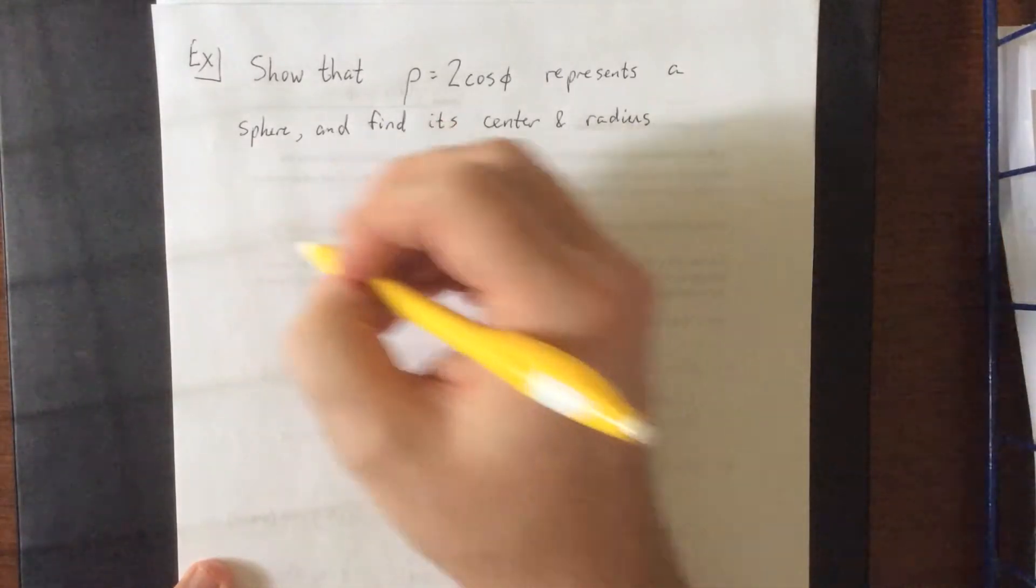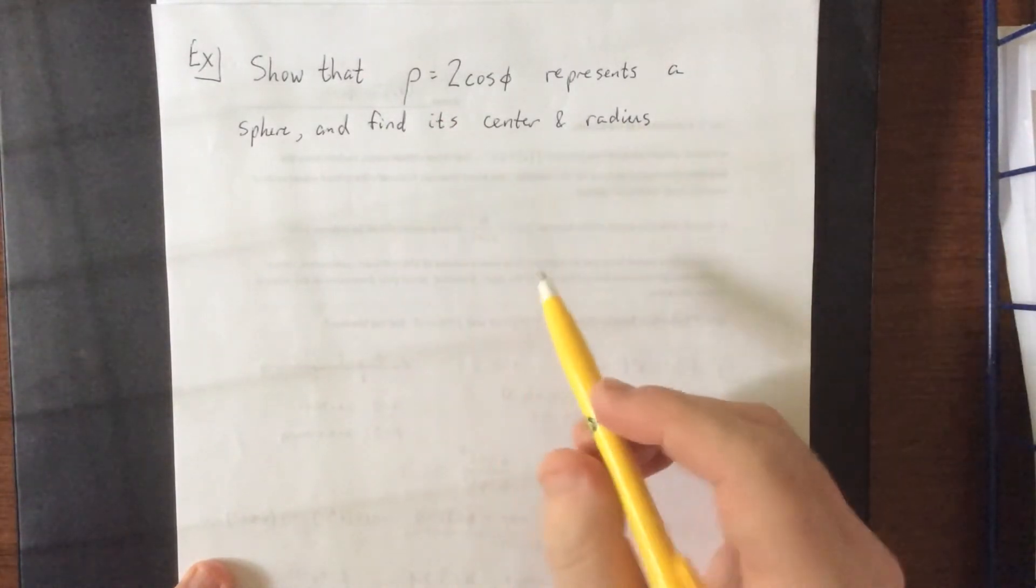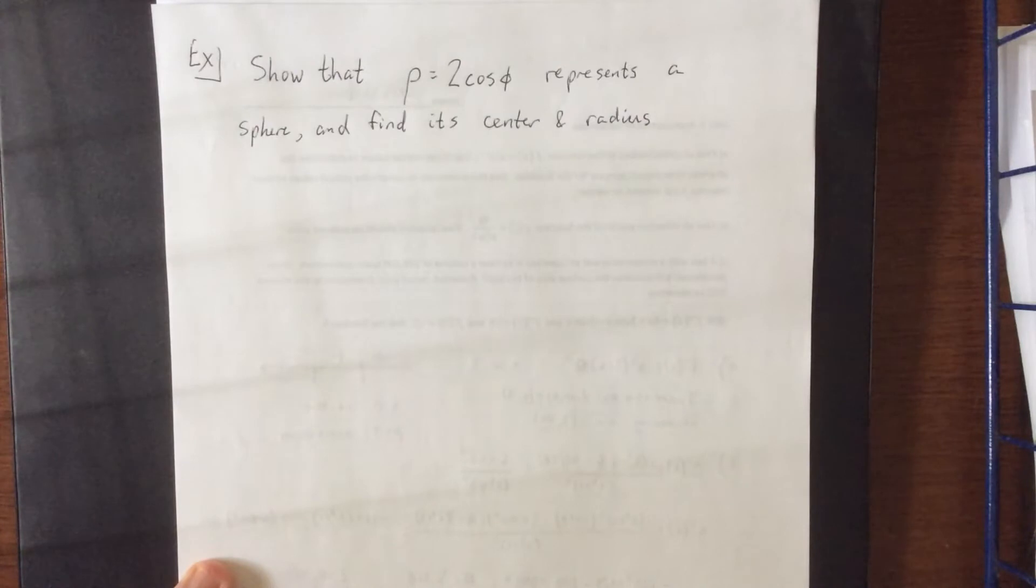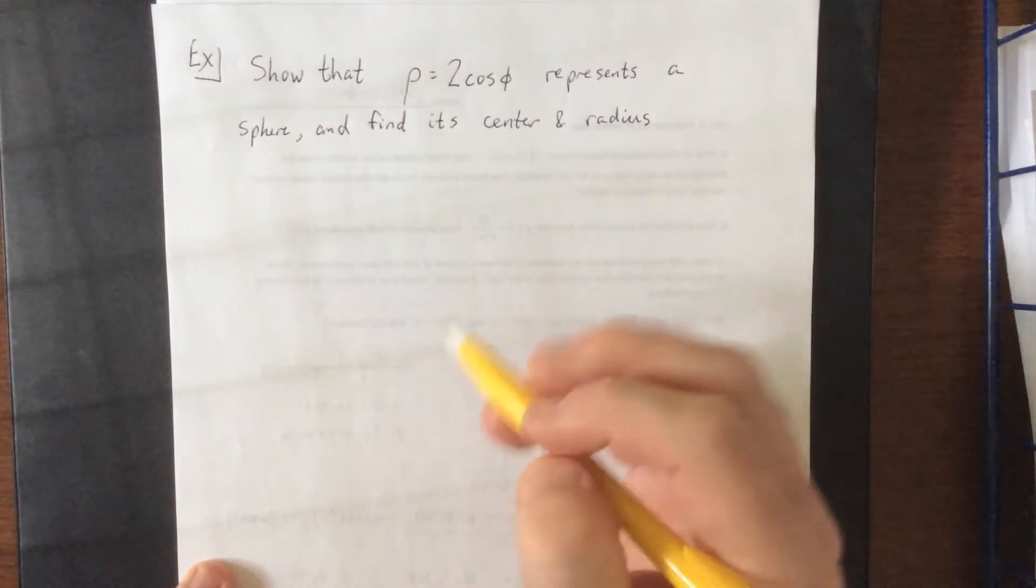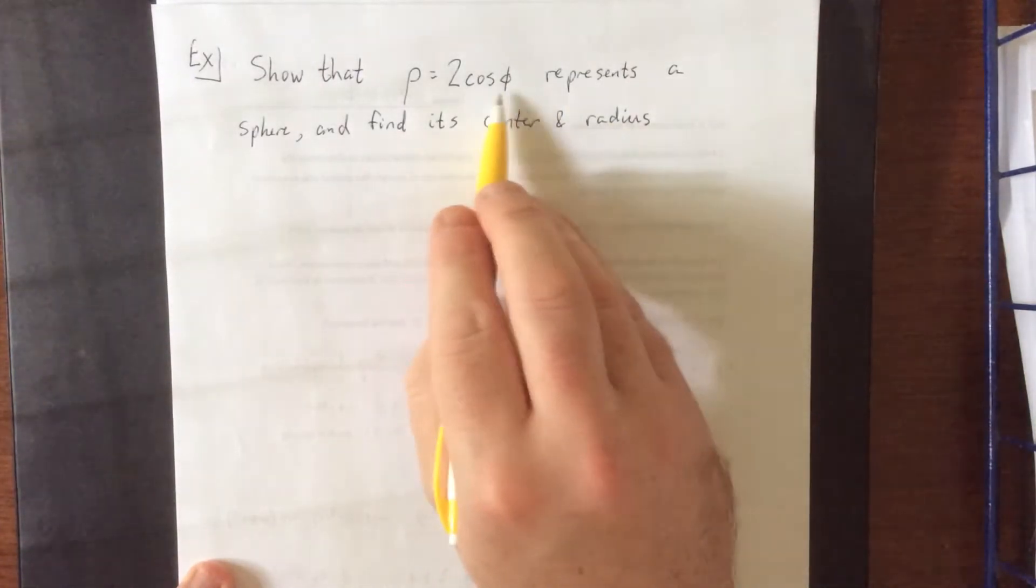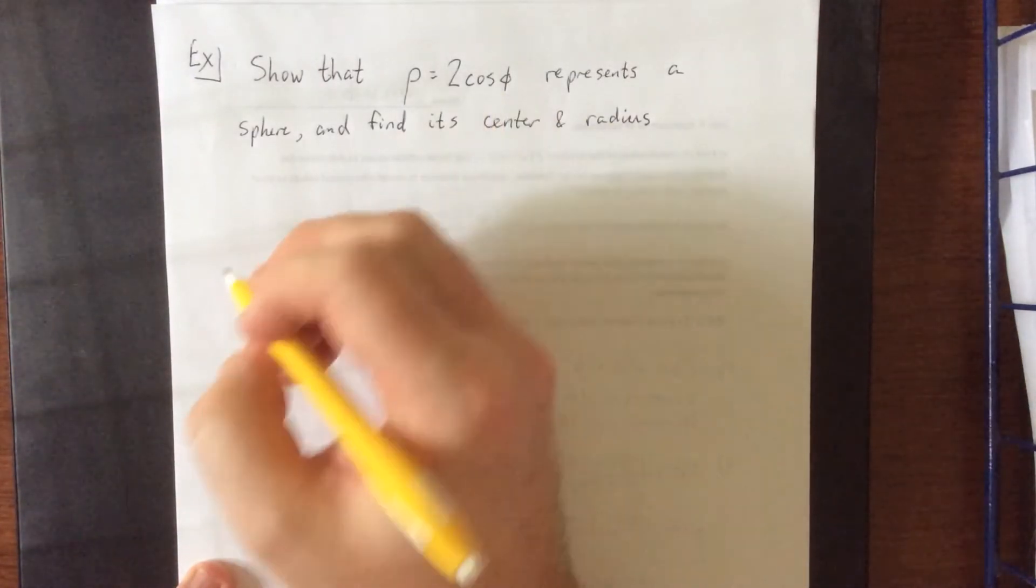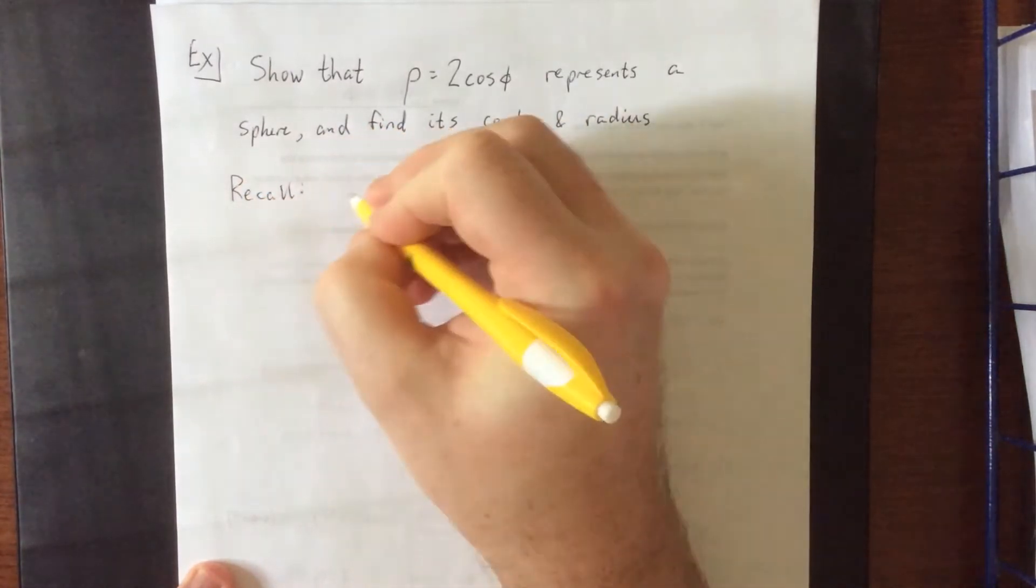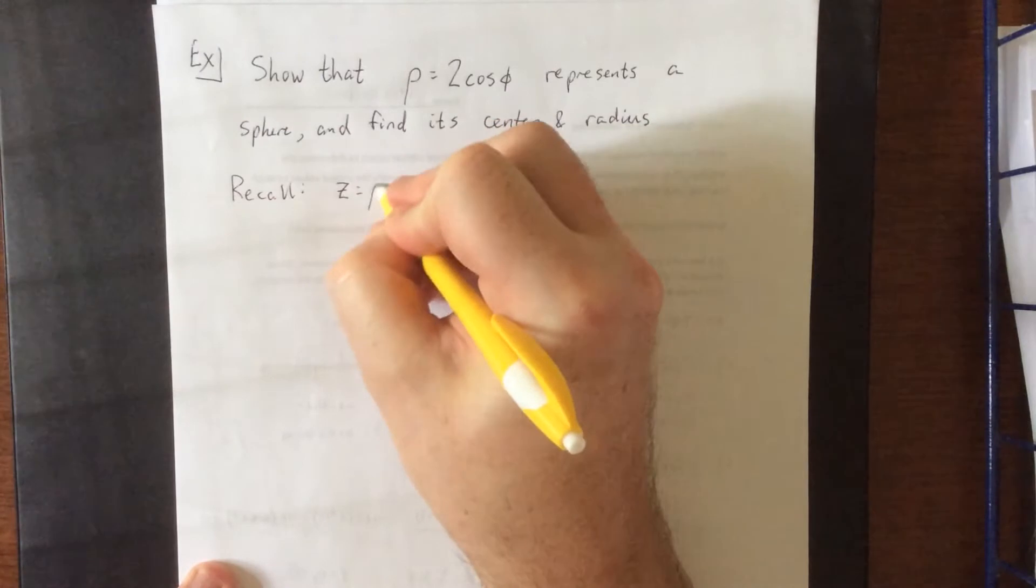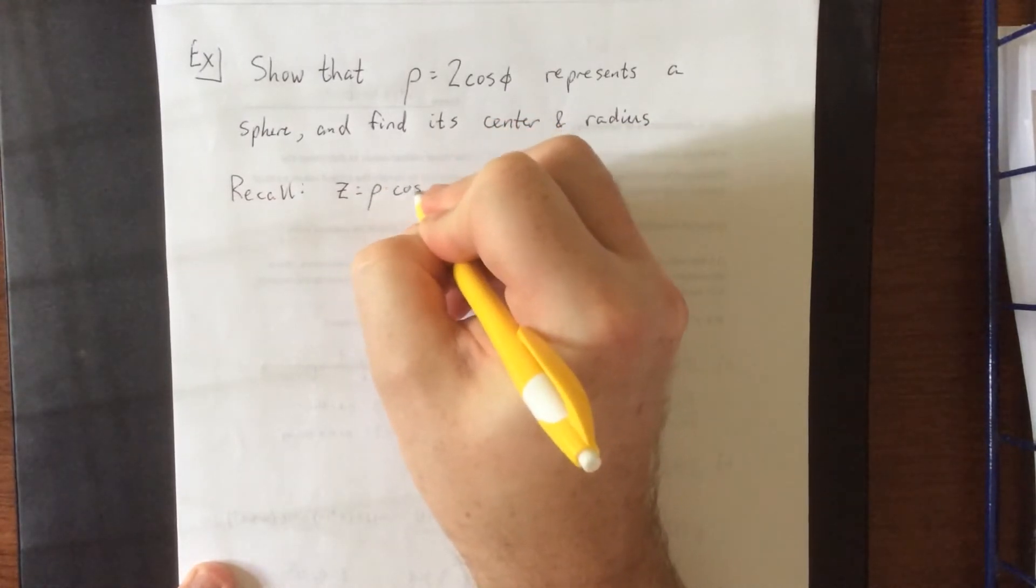So with that in mind, the conversions that we have as far as converting this back into either cylindrical or Cartesian coordinates, one big one that speaks to me is the fact that we have a cosine of phi in here. So I will ask you to recall with me that the Z coordinate is equal to rho times the cosine of phi.